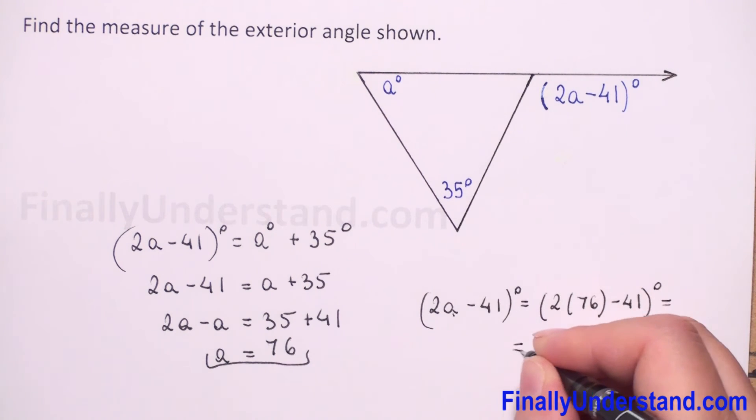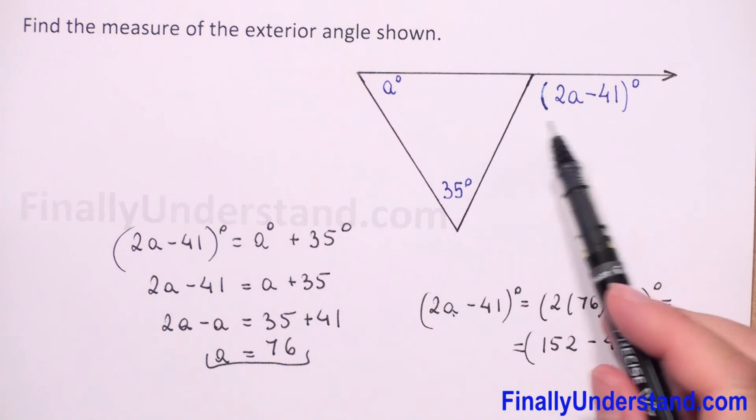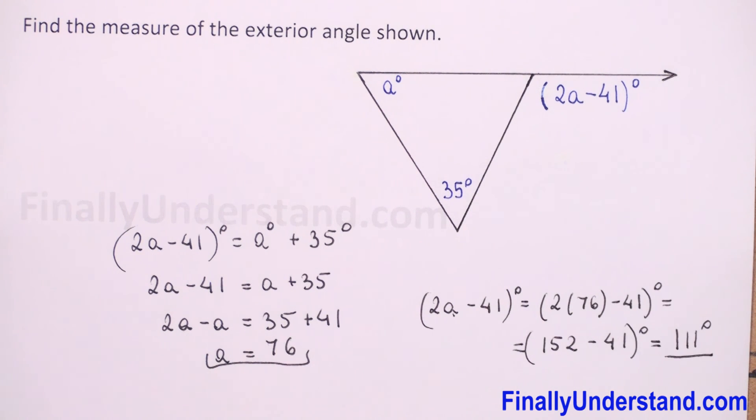So this is equal to 152 minus 41 degrees. So this is equal to 111 degrees. So we have our exterior angle. This is my solution.